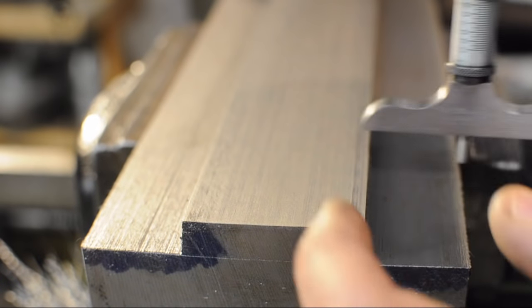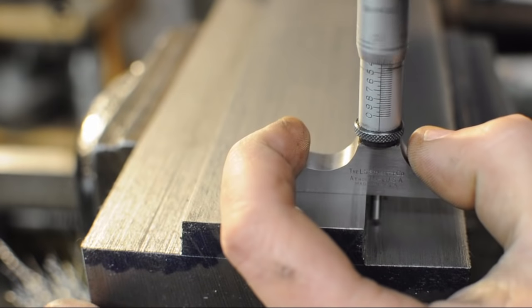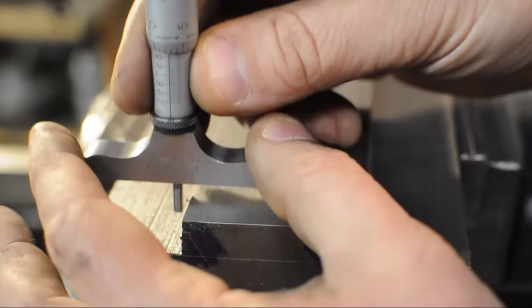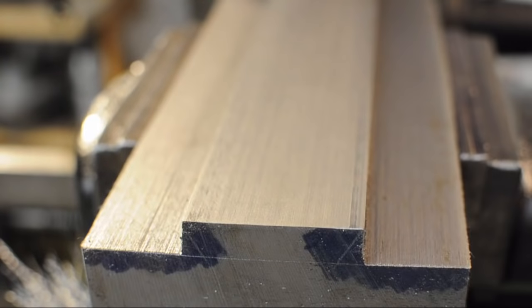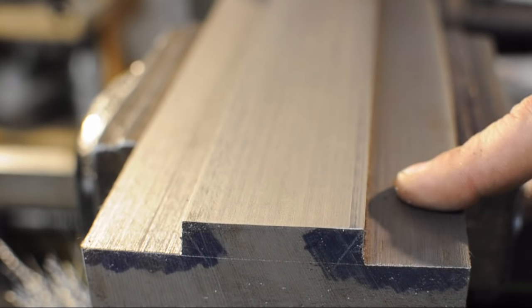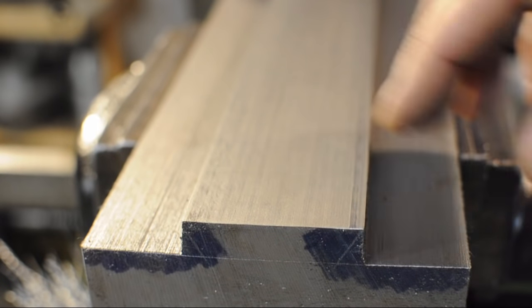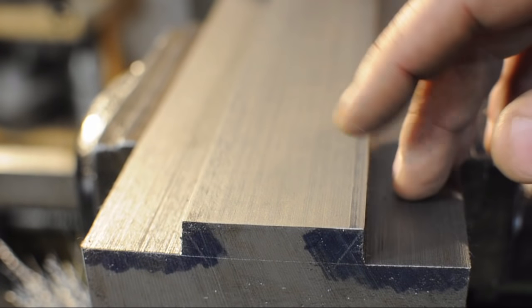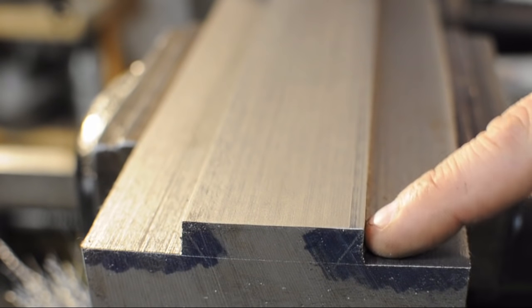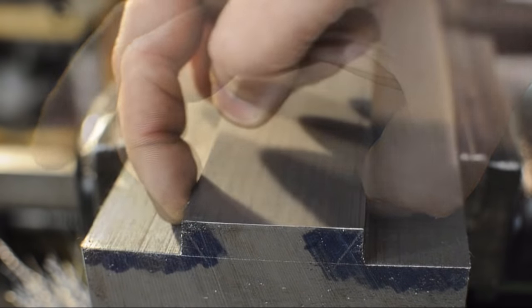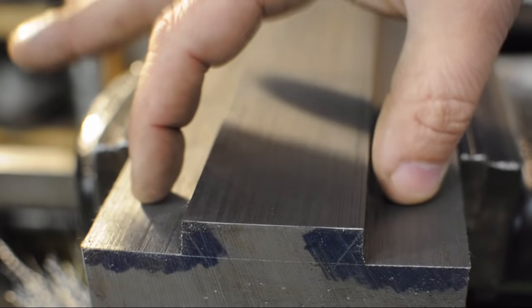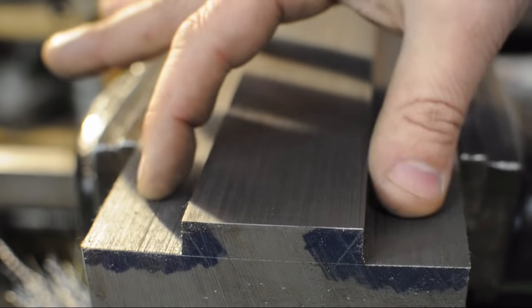That's our first reference surface. I'm about 10 or 11 thou higher on the right-hand side here. I'm going to set up for the dovetail cutter, use it to rough out the dovetail, and then pull my way out on both sides, trying to take these both to the same exact height.